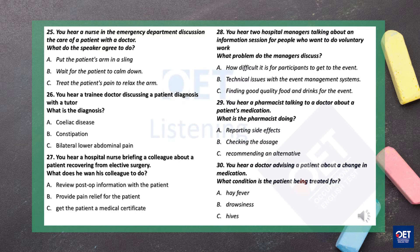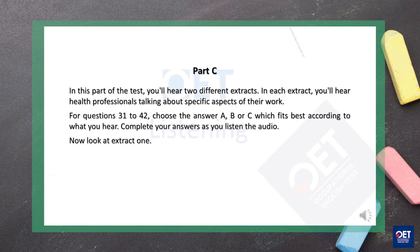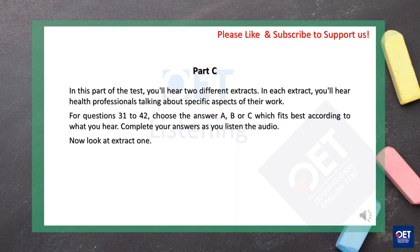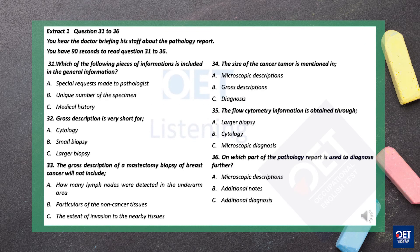That is the end of Part B. Now turn over and look at Part C. In this part of the test, you'll hear two different extracts. In each extract, you'll hear health professionals talking about specific aspects of their work. For questions 31 to 42, choose the answer A, B, or C, which fits best according to what you hear. Complete the answers as you listen. Now look at extract 1. Extract 1, questions 31 to 36. You hear the doctor briefing his staff about the pathology report. You have 90 seconds to read questions 31 to 36.